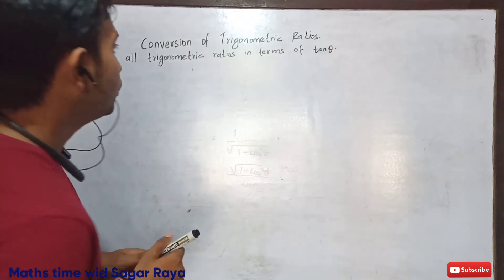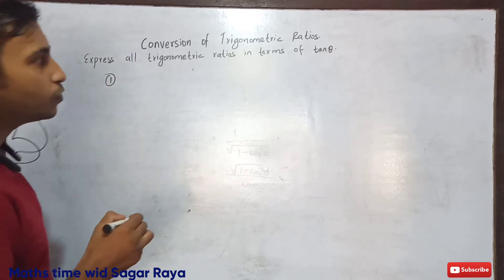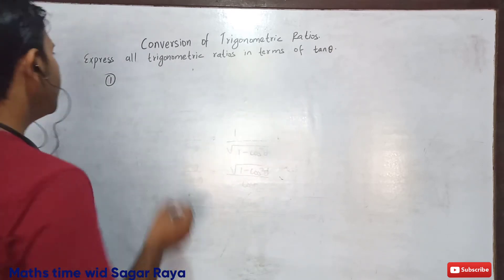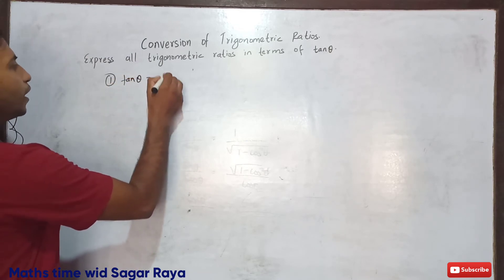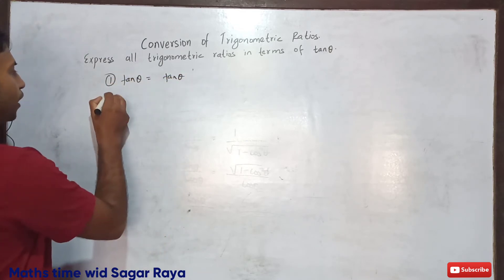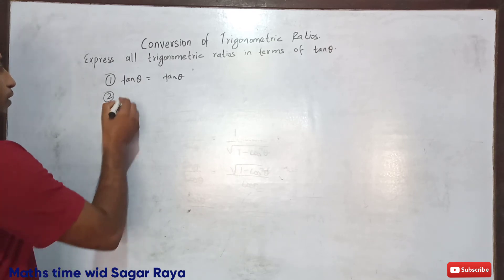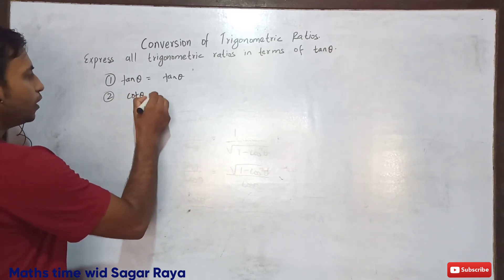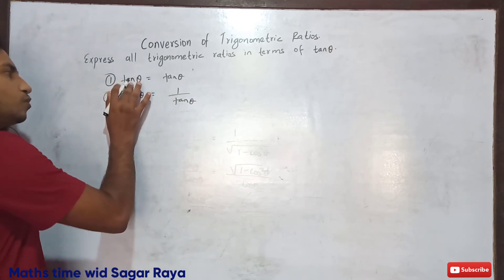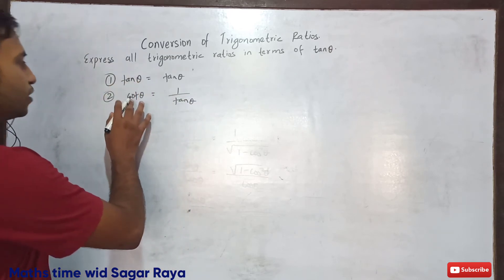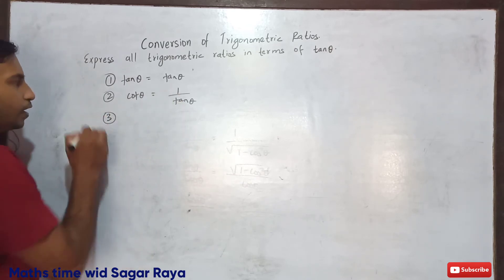So let's do this question. We have to express all trigonometric ratio in terms of tan theta. First of all, we can write tan theta as tan theta. Then we can write cot theta equals to 1 by tan theta, since cot theta is the inverse of tan theta.